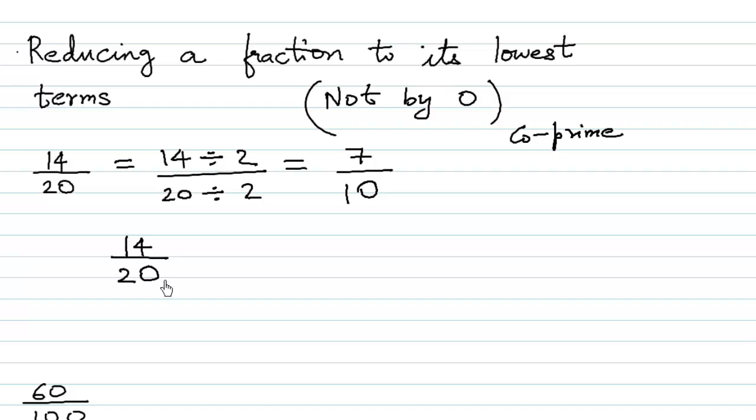We know 14 and 20 go in the table of 2, so we can cancel and write: 2 times 7 is 14, and 2 times 10 is 20. Since they cannot be further subdivided, we write this as 7 over 10.